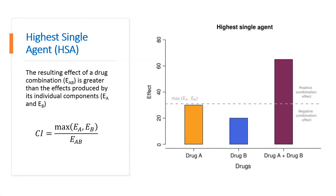The highest single agent approach, or cooperative effect, simply reflects the fact that the resulting effect of a drug combination is greater than the effects produced by its individual components. A combination index can be calculated using the formula shown here, and the significance of a positive effect is given by the p-value of the statistical test comparing the combination to the highest single agent.